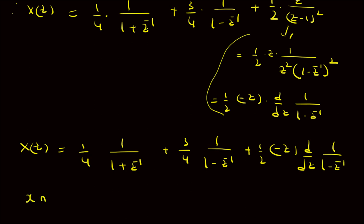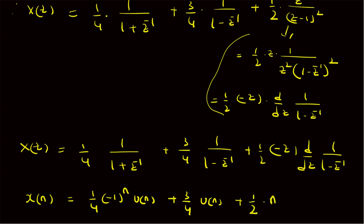Now we find the inverse z-transform term by term. The inverse z-transform of 1/(1+z⁻¹) is (-1)ⁿu[n]. The inverse z-transform of 1/(1-z⁻¹) is u[n]. For the third term, using the derivative property of the z-transform, the inverse z-transform is n·u[n]. So x[n] = (1/4)(-1)ⁿu[n] + (3/4)u[n] + (n/2)u[n].